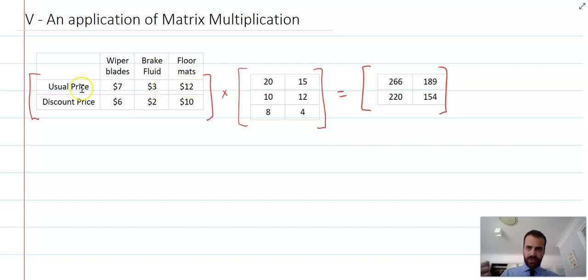The discount price, let's say they do discounts, six dollars, two dollars, and ten dollars. So we've got some context there. Let's throw some context around this second matrix.